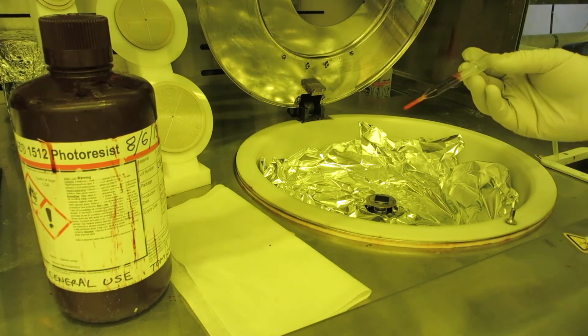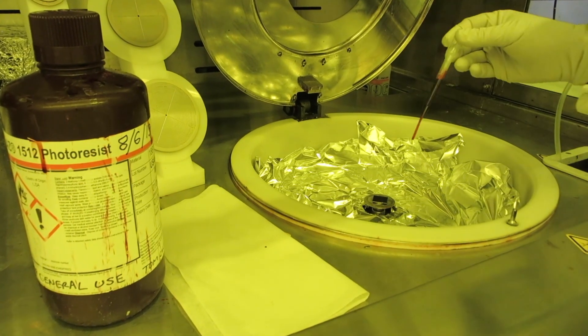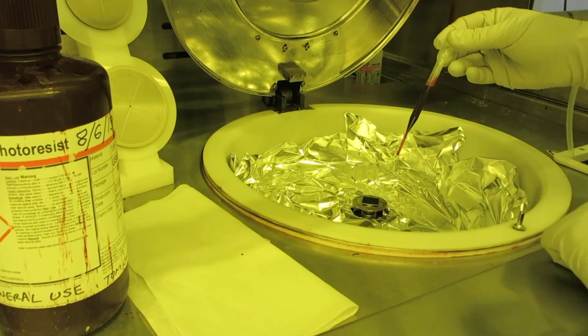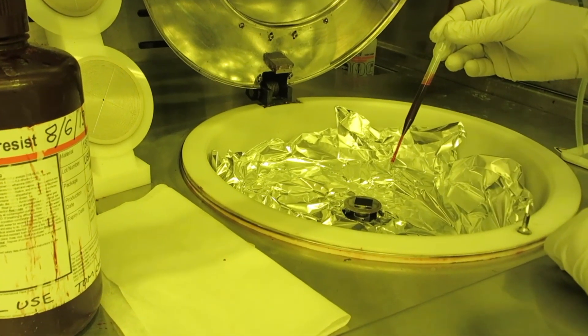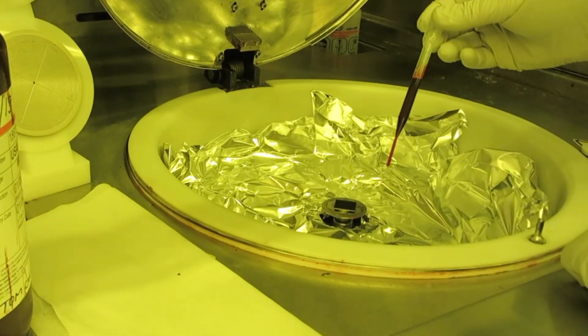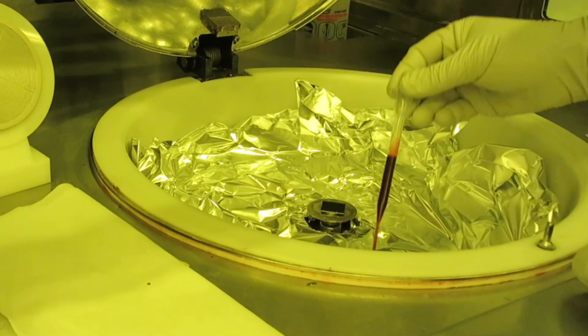If you do have a bubble, you can squeeze it out onto the foil. When you see there are no bubbles left in the pipette, start dispensing it onto the chip.